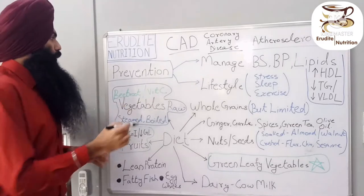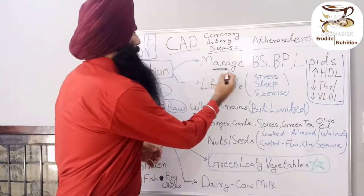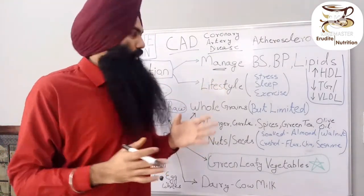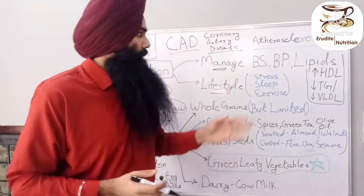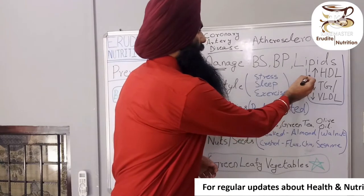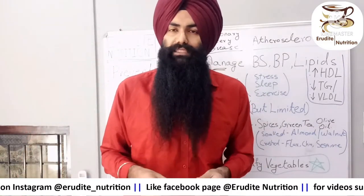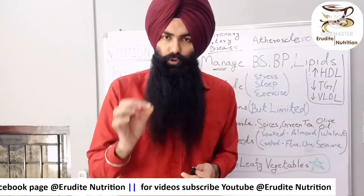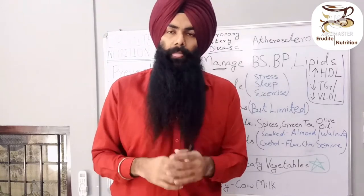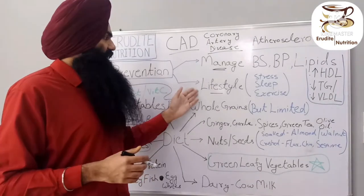Before beginning, let's discuss two shorthand notes. Number one — prevention from coronary artery disease, arteriosclerosis, or any other heart problem. We have to manage our blood glucose, blood pressure, and lipids. The best way is through lifestyle changes. We keep blood sugars and blood pressure in control, keep HDL high, triglycerides low, and VLDL as low as possible. LDL is not focused on directly because if you control total cholesterol, triglycerides, and VLDL, LDL will normalize.